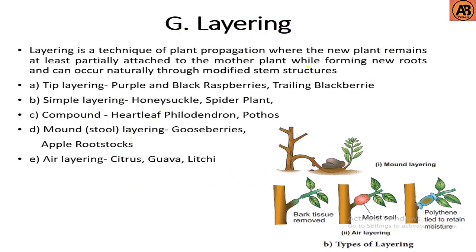Next is layering, another type of asexual propagation. Layering is a technique where the new plant remains at least partially attached to the mother plant while forming new roots, and can occur naturally through modified stem structures. Layering may be classified into tip layering, simple layering, compound layering, mound layering, and air layering. Examples: tip layering — purple and black raspberries, blackberries; simple layering — honeysuckle, spider plant; compound layering — heart leaf philodendron, pothos; mound layering — gooseberries, apple stalks; air layering — citrus, guava, lychee.